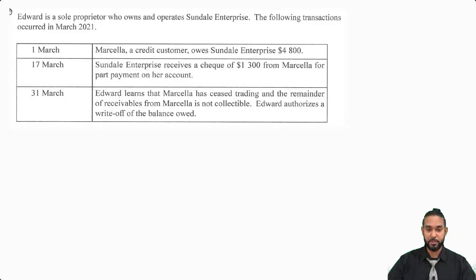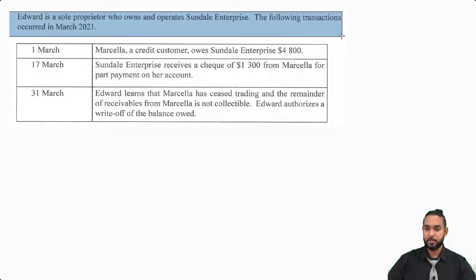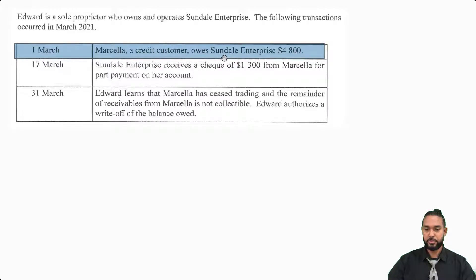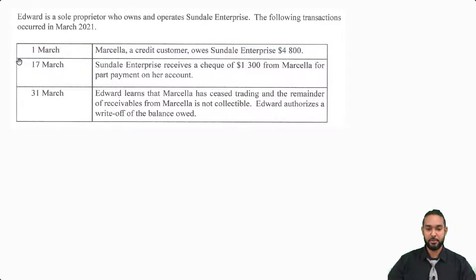So let's take a read of the information. It says Edward is a sole proprietor who owns and operates Sundale Enterprise. The following transactions occurred in March 2021. So on the 1st of March, it says that Marcella, a credit customer, owes Sundale Enterprise $4,800. Now that's not actually a transaction — that's just a statement of the amount of money Marcella owes Sundale.